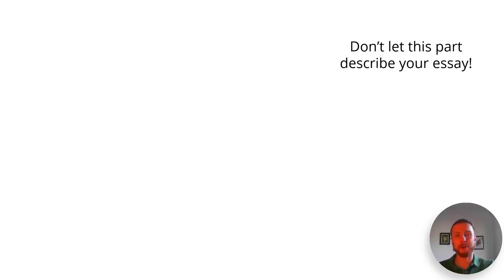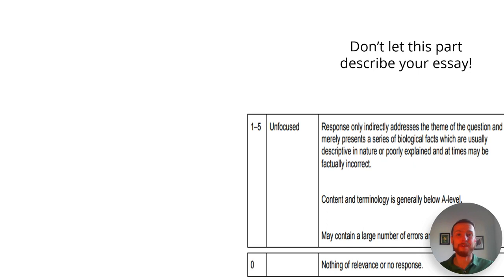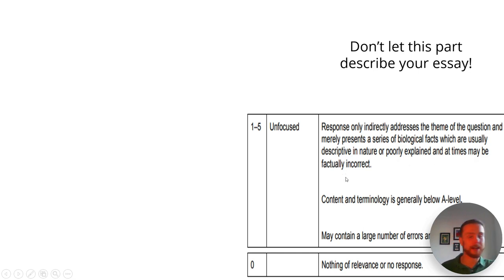Let's look at the marking hierarchy — the level ladder, or descriptors. Zero marks means nothing of relevance or no response whatsoever — that's not going to be you. One to five is 'unfocused': the response only indirectly addresses the theme of the question and merely presents a series of biological facts that are usually descriptive or poorly explained, and may be factually incorrect. Content and terminology is generally below A-level and may contain a large number of errors and irrelevant material. You can easily avoid this by not waffling about GCSE-level knowledge unrelated to the question.